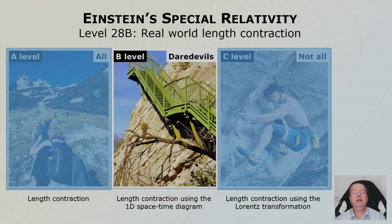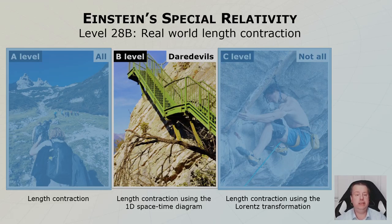My name is Tom and you are at level 28 in Mastering Einstein Special Relativity. This is the B level. We are talking about length contraction, classic length contraction, and real-world length contraction if you would take a movie or a picture. We will dive into a little bit more detail than the A level by using the space-time diagram, which was introduced in level 26. Let's get into it.